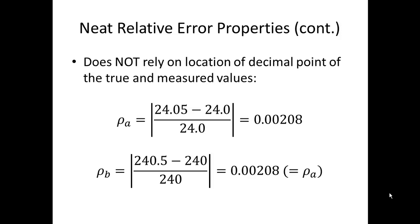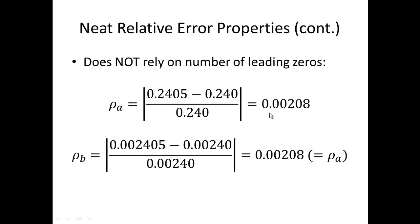For example, if I take the 24 and the 24.05 values and scale them both by 10, I get 240 and 240.5. The relative error in that case is actually equal to the relative error of the original case, the 0.00208. The relative error also does not rely on the number of leading zeros. I could have taken 24.0 and 24.05 and divided each by 100, and I would have the same 0.00208. Or I could divide by 10,000, moving the decimal place further left - still I end up with 0.00208 for relative error.